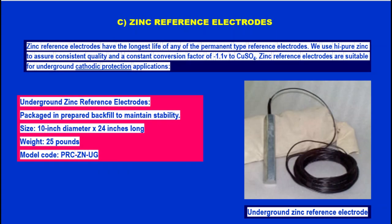The next type of electrode is Zinc Reference Electrodes, which have the longest life of any permanent type reference electrode. High purity zinc is used to assure consistent quality and a constant conversion factor of minus 1.1 volt to copper sulfate. Zinc reference electrodes are suitable for underground cathodic protection applications. Underground zinc reference electrodes are packaged in prepared backfill to maintain stability. Size: 10-inch diameter, 24 inches long, weight 25 pounds. Model code: PRCZUG.